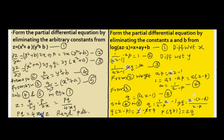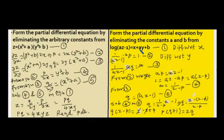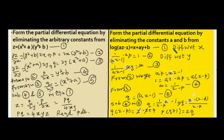The second problem is: form the partial differential equation by eliminating the constants a and b from log of (az minus 1) equals x plus ay plus b. Here also we have two arbitrary constants. This is a different kind of problem — usually z is given separately, but here it is coming inside the logarithmic function. Procedurally, we can differentiate. Let us take the given equation as equation number one.